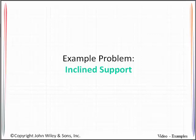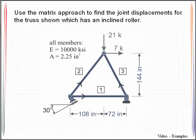Well hello again. In this example you will learn how to modify your degree of freedom orientations so that you will be able to include the effects of inclined supports. We are being asked to use the matrix approach to find the joint displacements for the truss shown and you'll notice that it has an inclined roller.